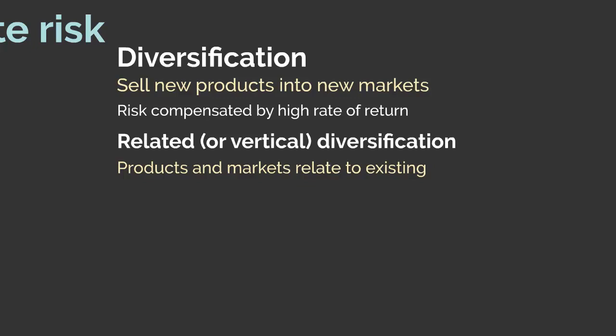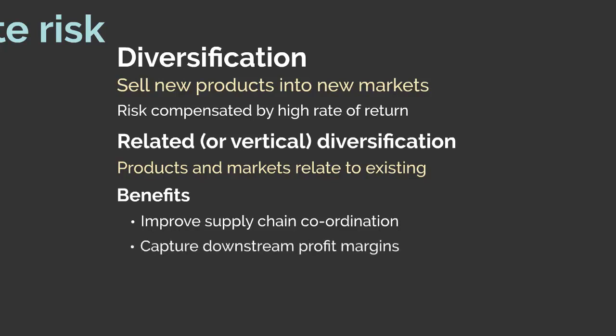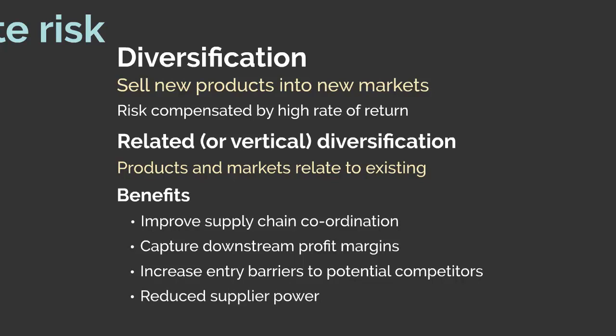There are additional benefits of related diversification. It improves supply chain coordination, such as delivery times of components. It also captures downstream profit margins, since the entity now has a guaranteed customer in itself. It also increases entry barriers for potential rivals — for example, an organisation could gain sole access to scarce resources. If Netflix buys up production companies, it becomes far harder for new streaming services to acquire content. It also reduces supplier power.